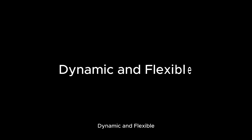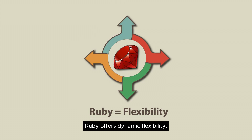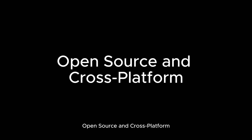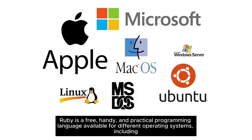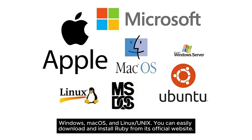Dynamic and Flexible: Ruby offers dynamic flexibility. It is open-source and cross-platform — a free, handy, and practical programming language available for different operating systems, including Windows, macOS, and Linux/Unix. You can easily download and install Ruby from its official website.